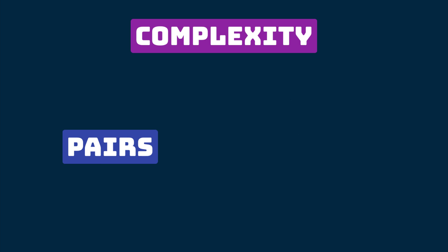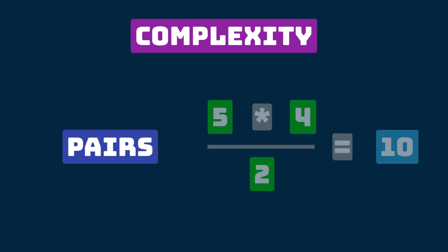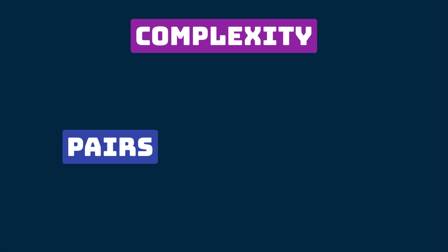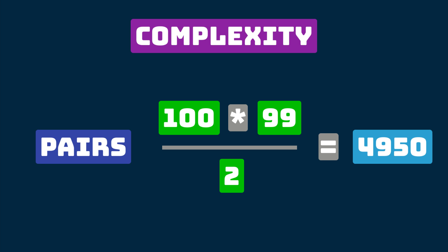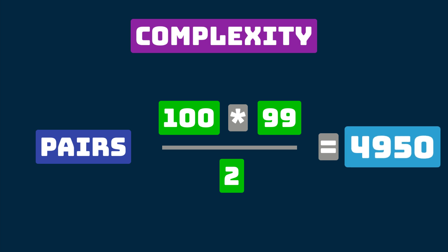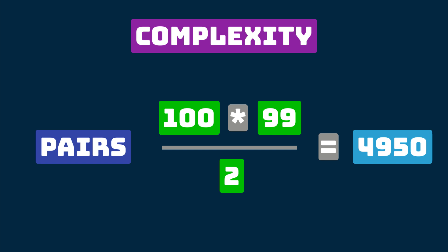Let's verify how this formula works for five elements — it gives us ten, which is a correct result. But if there are, let's say, one hundred elements, the total quantity of pairs will be close to five thousand, which is really huge.